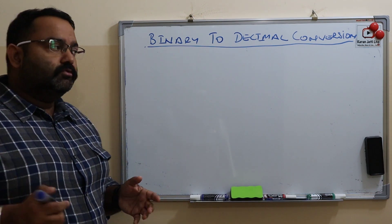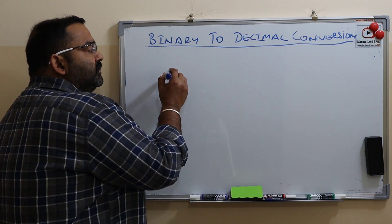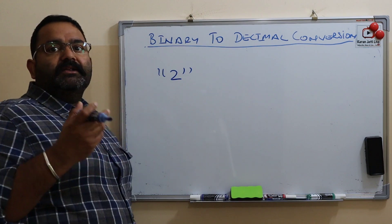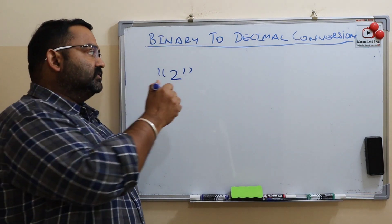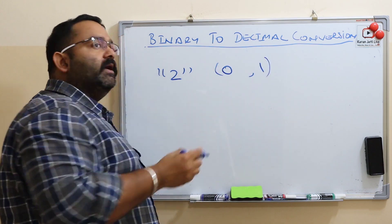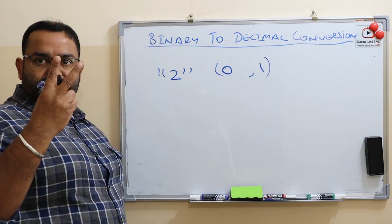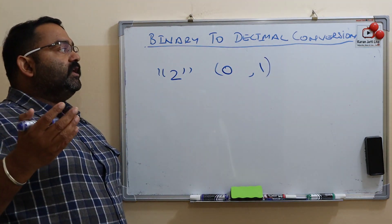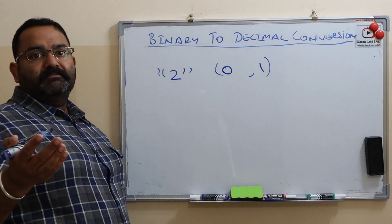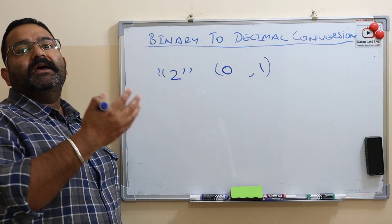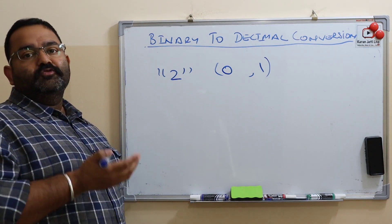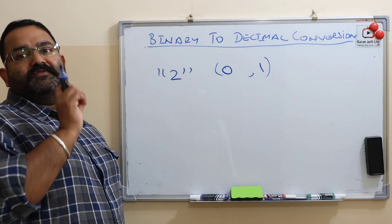So now guys, all of you know the base of a binary number is two. So why is it two? Because in binary you have only two numbers, that is zero and one. So the base of binary number is two. So whenever we have a binary number and we have to convert it to a decimal number, we have to multiply the binary number by its base to the power of the position of that digit.